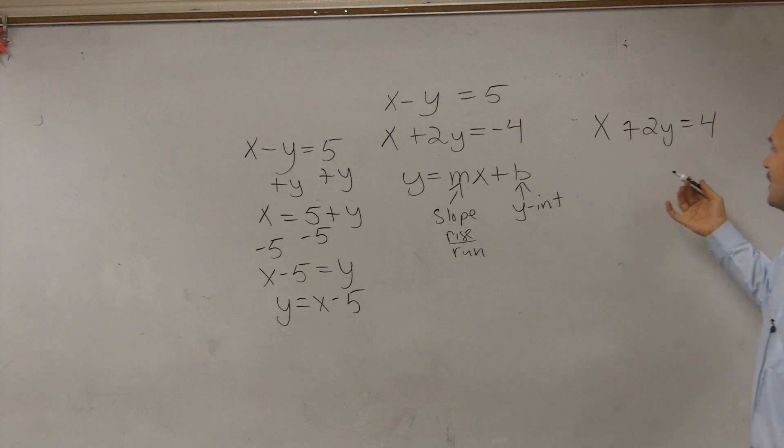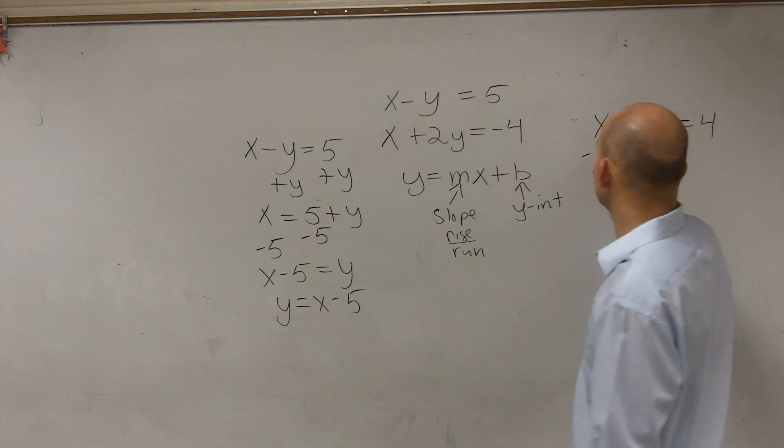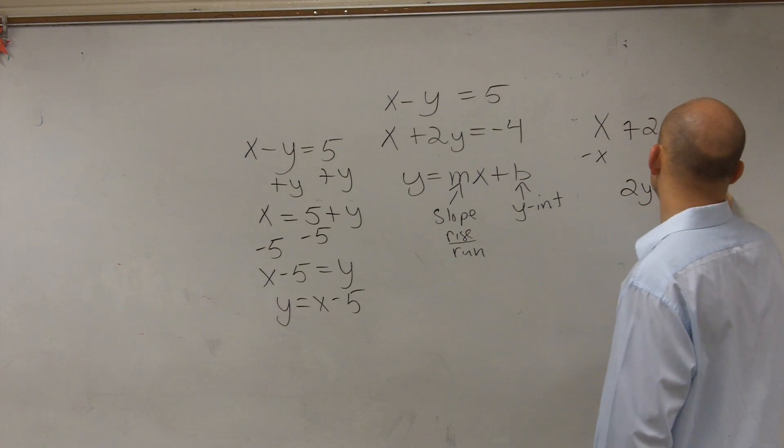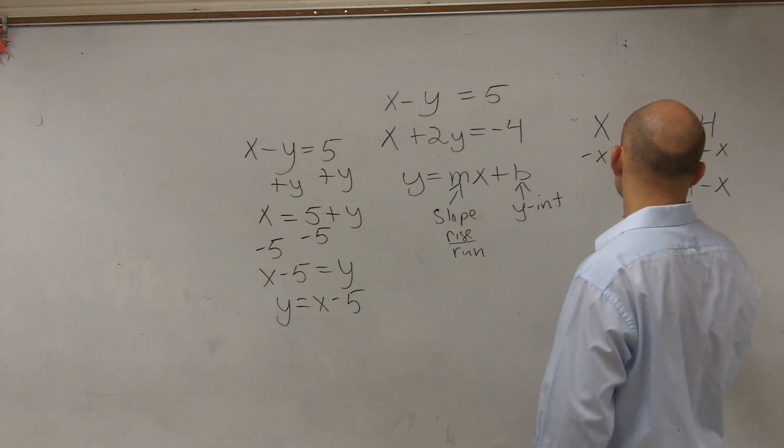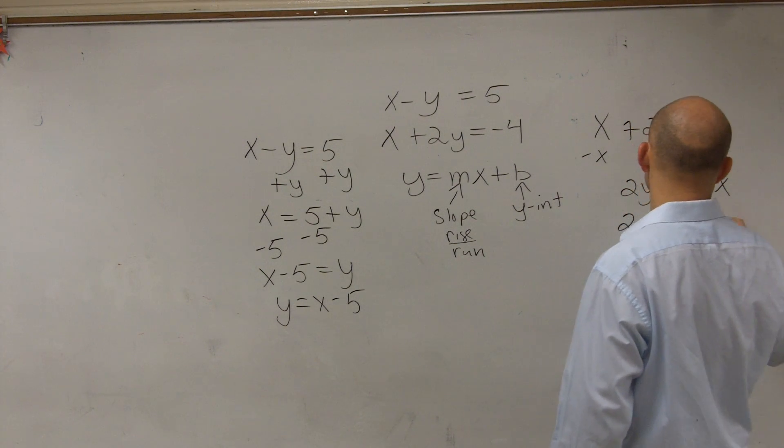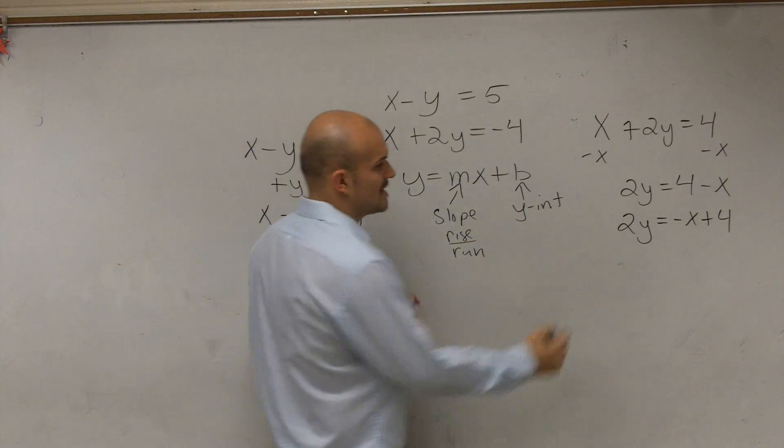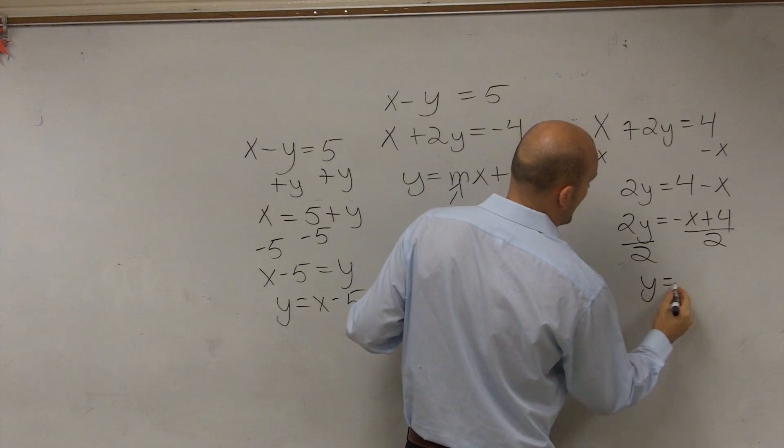Then for this one to get our y by itself, I'm going to go a little different route. I'm going to keep the y there, but get rid of everything else. So we're going to have 2y equals 4 minus x. Now, when doing it this way, we always like to write the x in front of our other constant. So I'm going to rewrite these as 2y equals negative x plus 4. Now what I can do is undo what's happening to the y by dividing by 2.